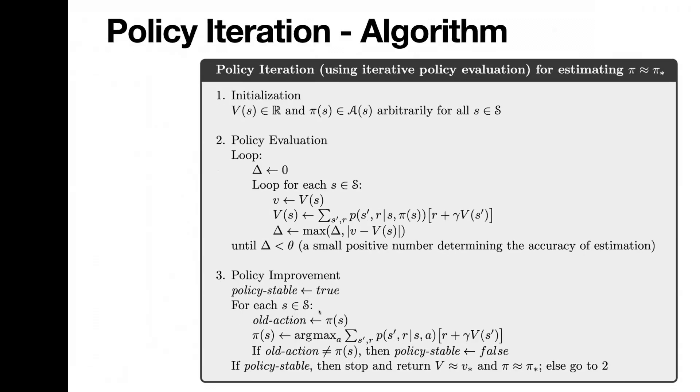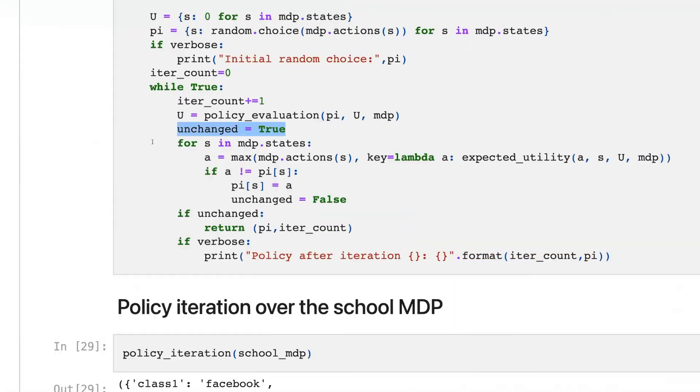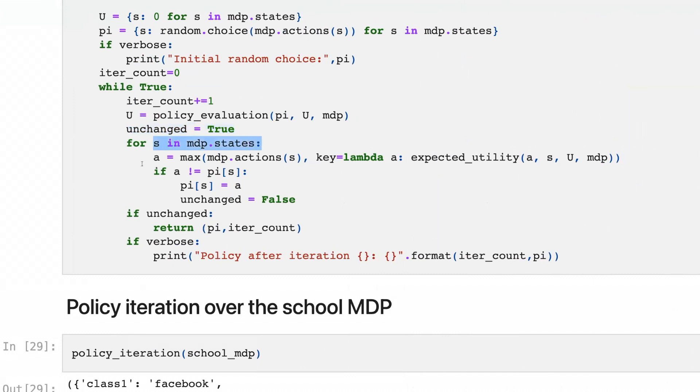Then for each state in the set of available states, we compute the optimal action to be taken in this state. And if this optimal action is not equal to the existing policy, we update the policy.